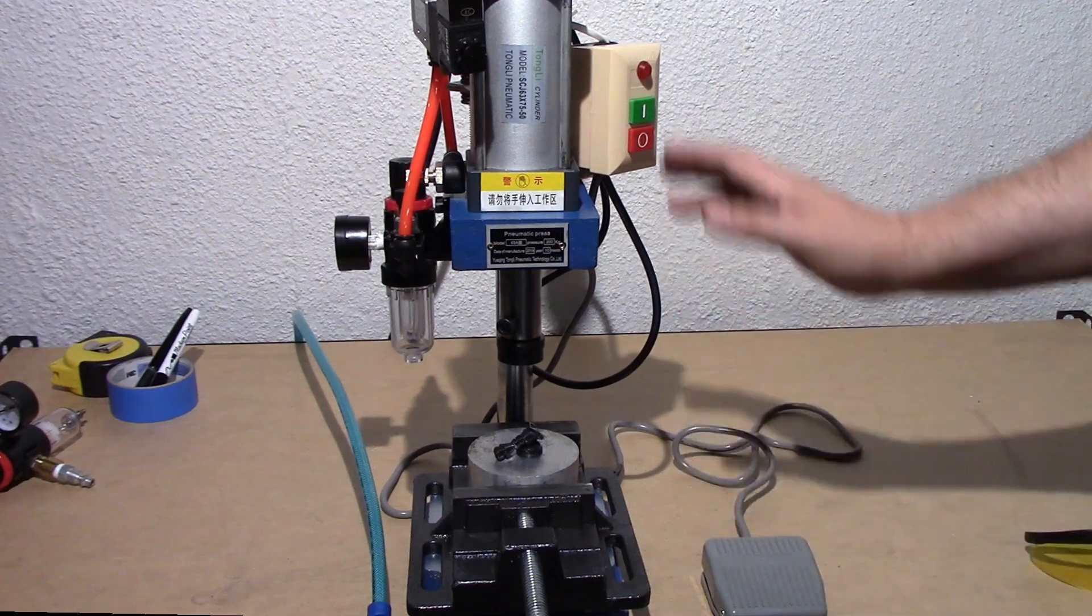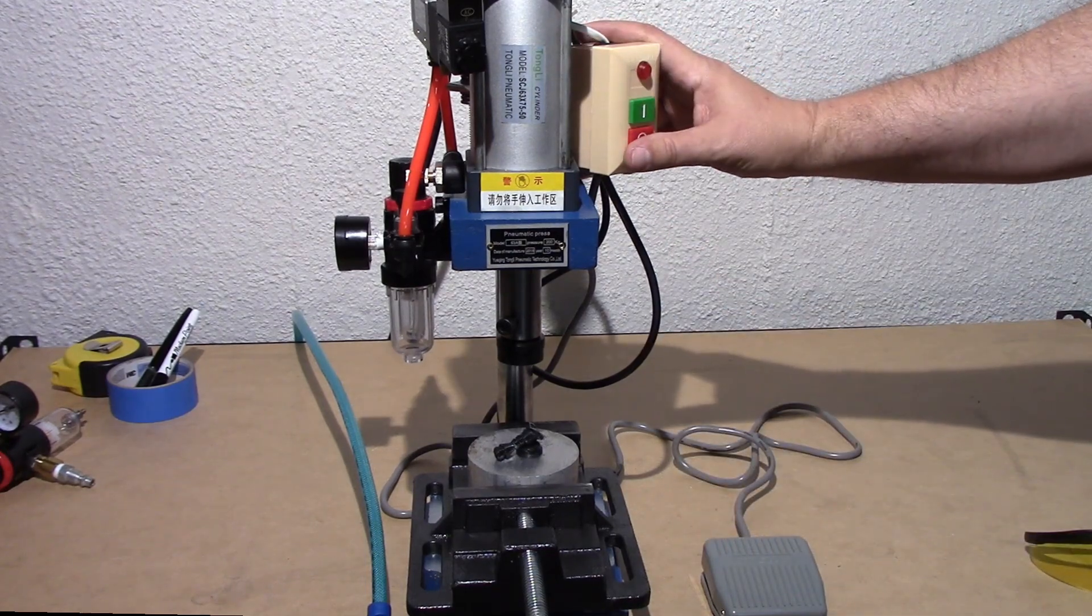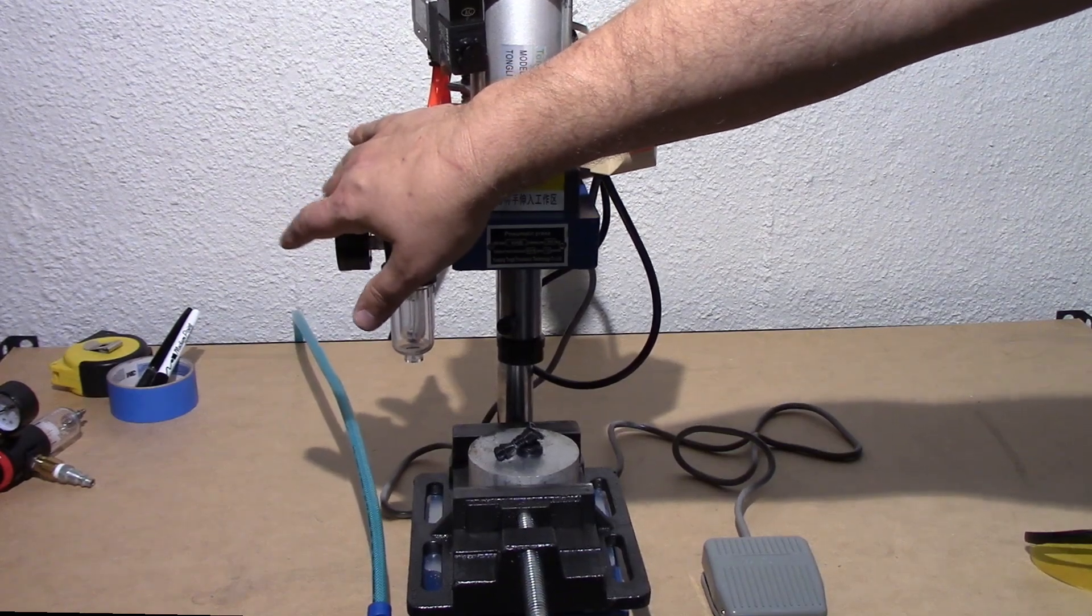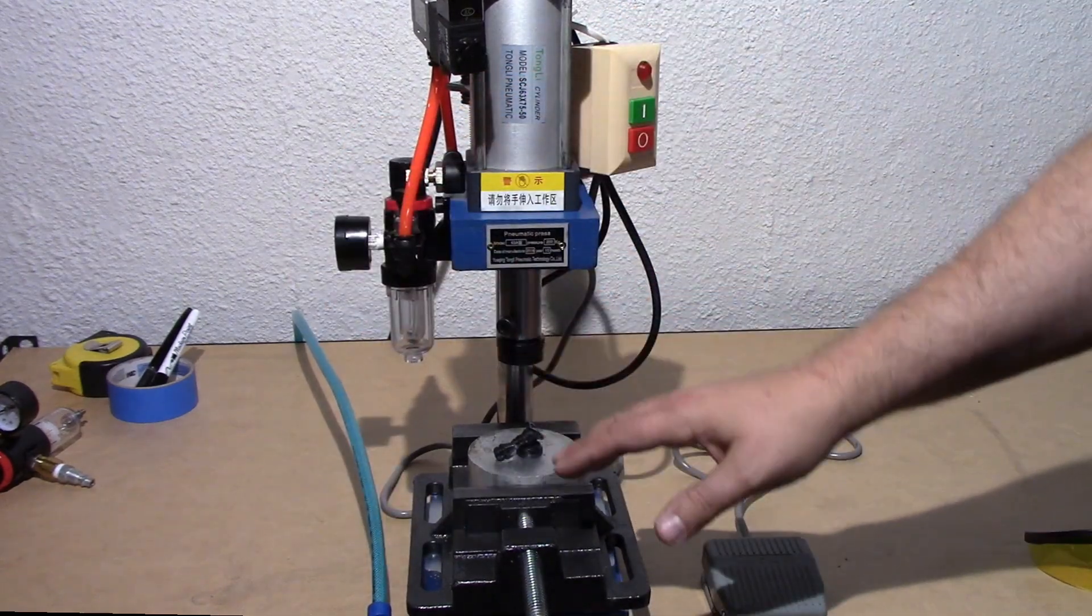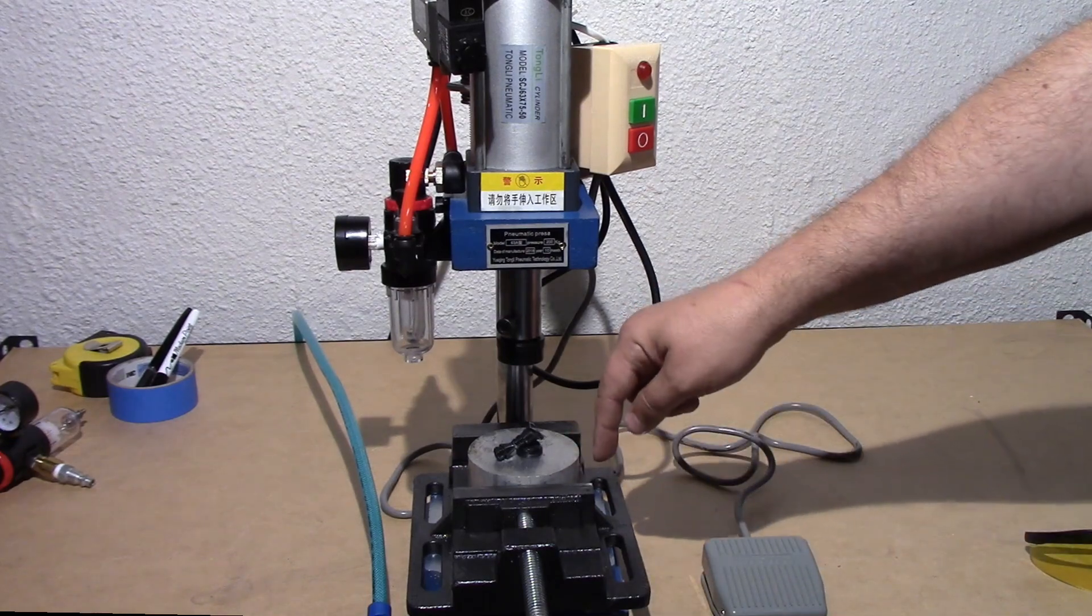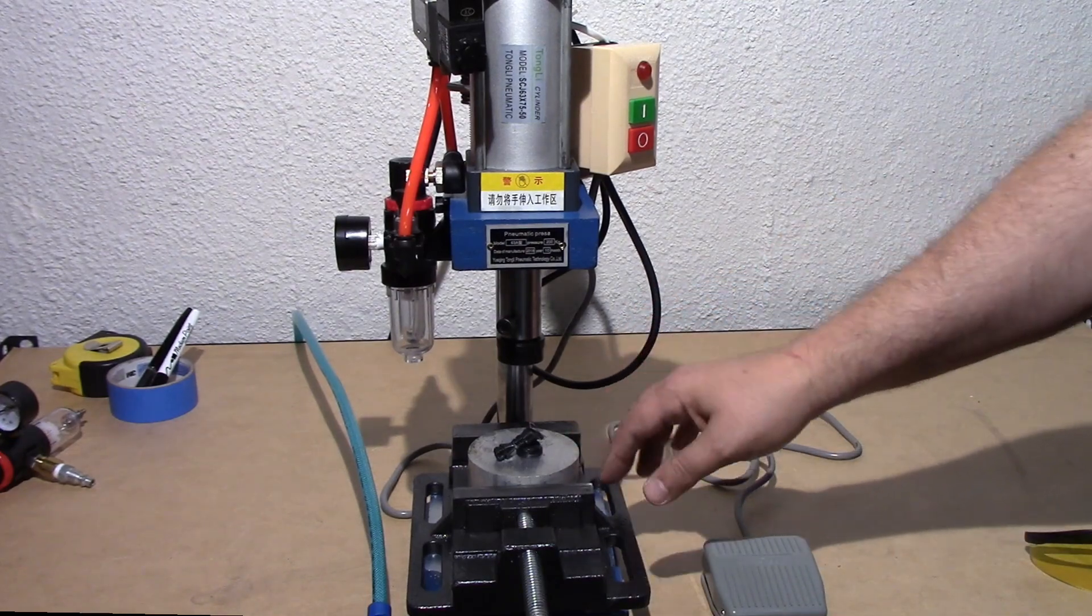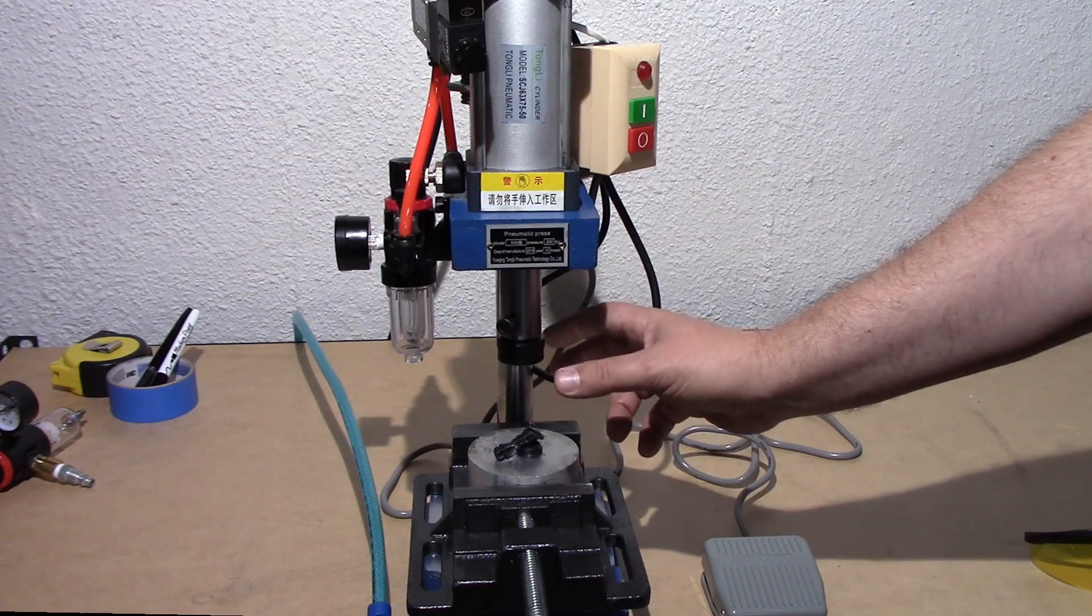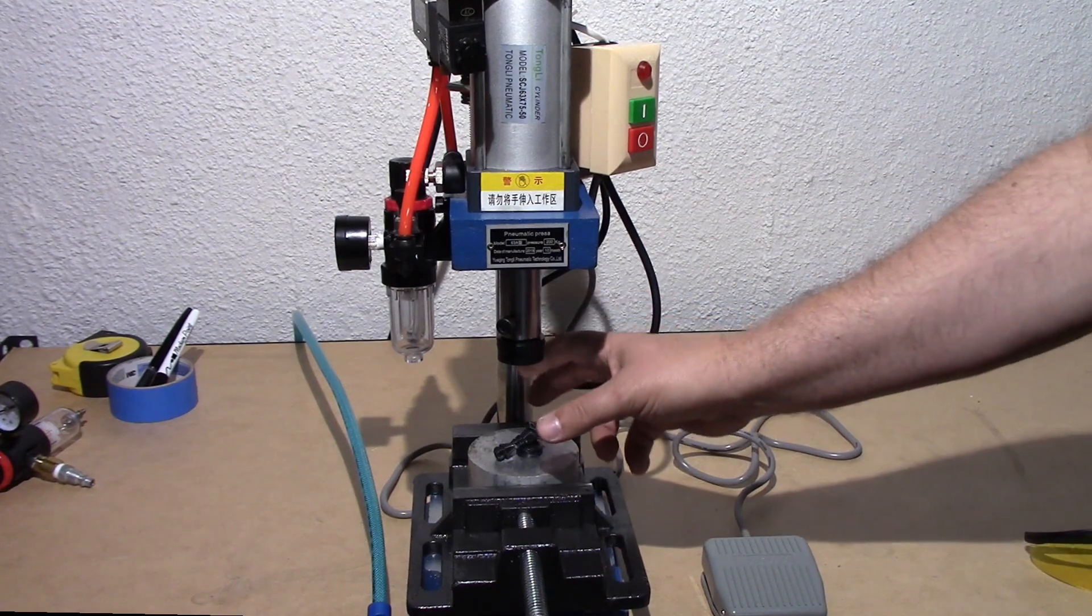This box just turns it on and off. I've got the cheap Chinese gauge over here. I've ordered a digital gauge so I can get more precise on my adjustments for pressure. Also I'm going to get a scale for down here because I'm going to build a fixture to do testing on 3D prints.